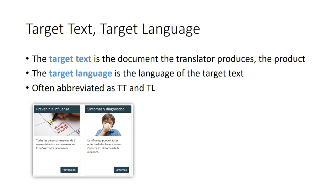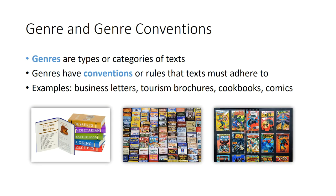The flip side is the target text and target language. The target text is the document the translator produces — the product — while the target language is the language of that target text. The abbreviations are TT and TL. Using the same CDC example, the target text would be the CDC website in español, and the target language is Spanish.